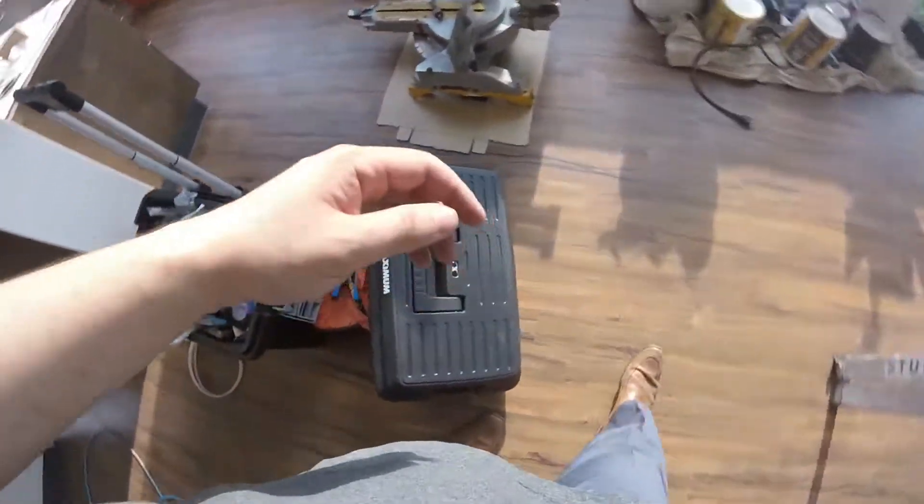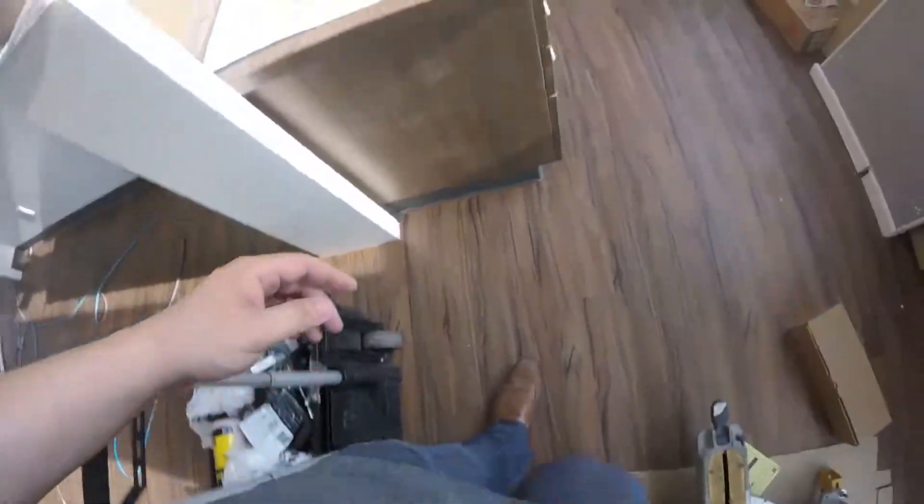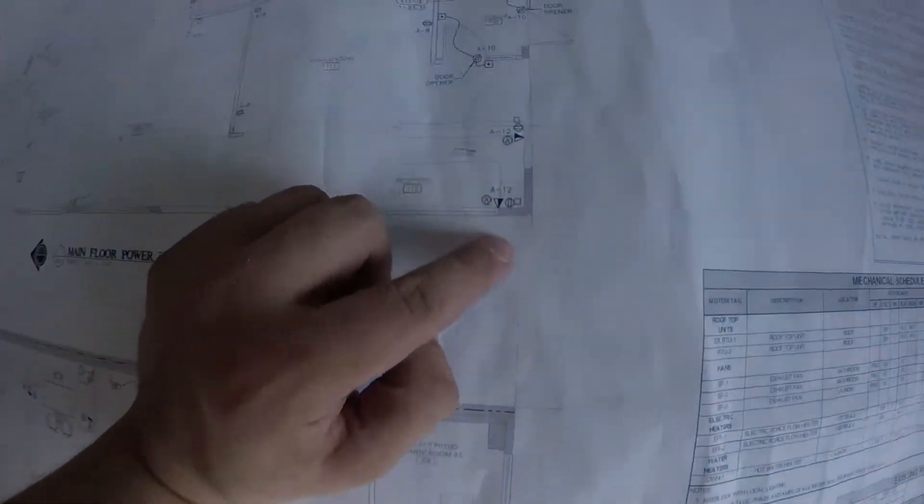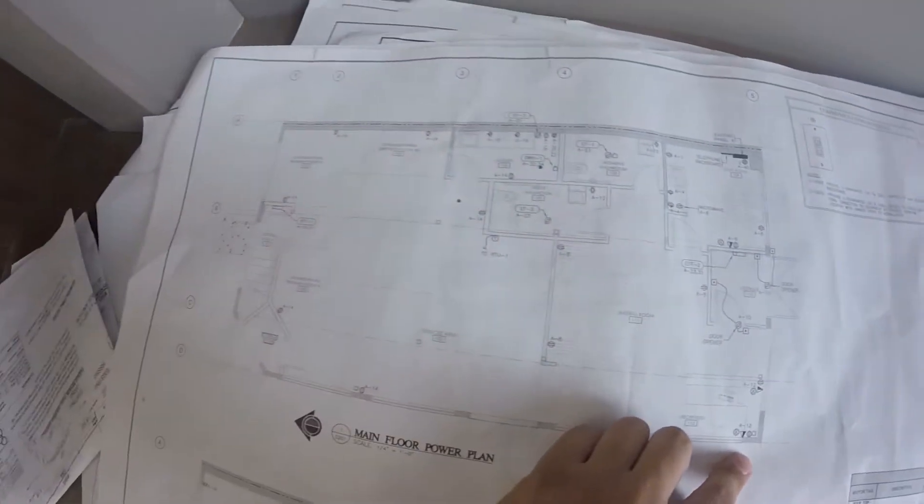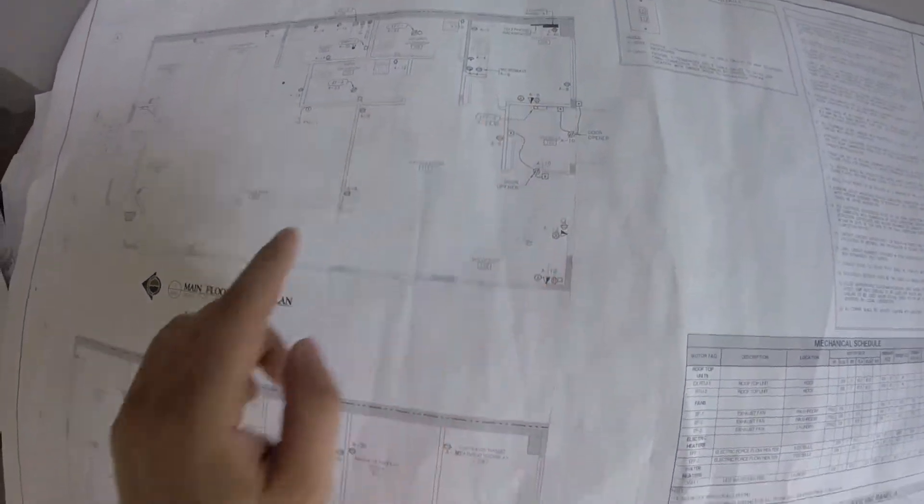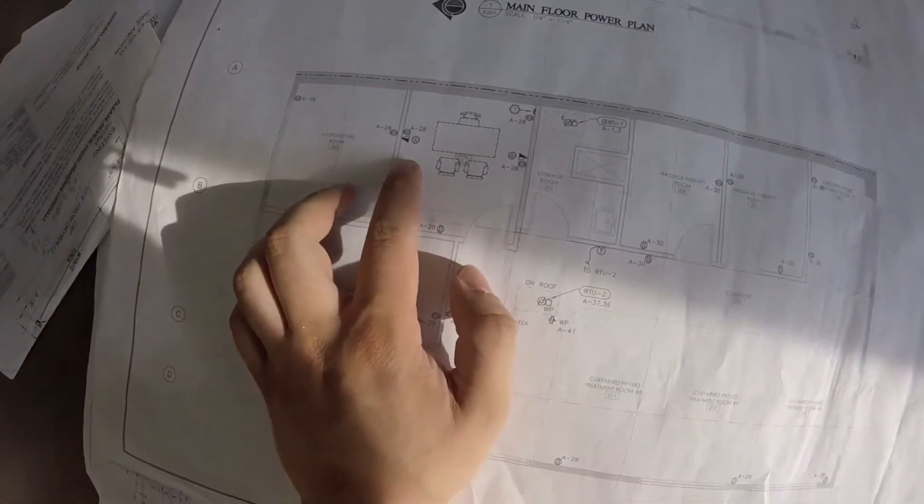Unfortunately it's got a drywall ceiling so I couldn't go up and take a look. But the first thing I did was check the drawings here. You can see where the triangles are. Those are dual data and telephone jack drops.